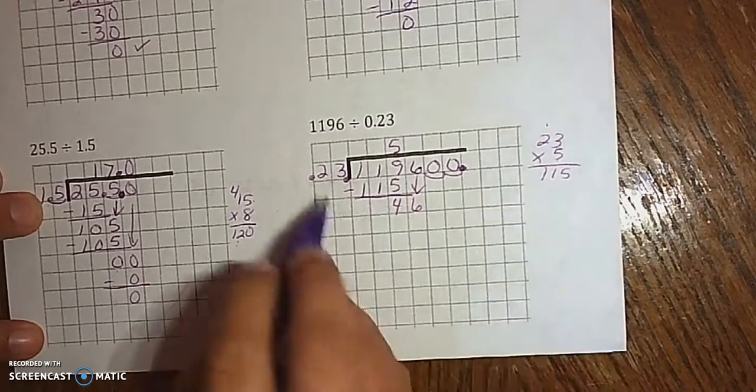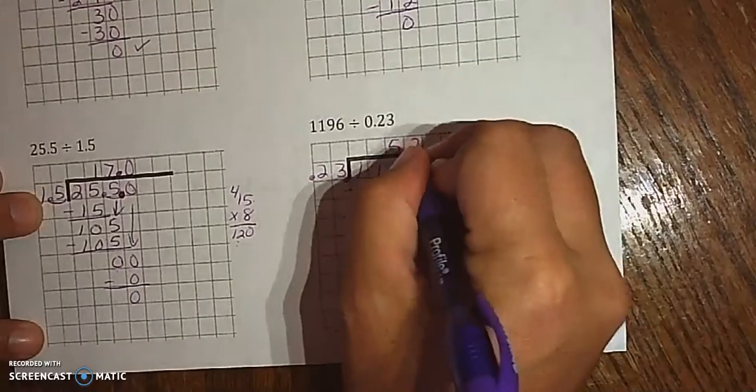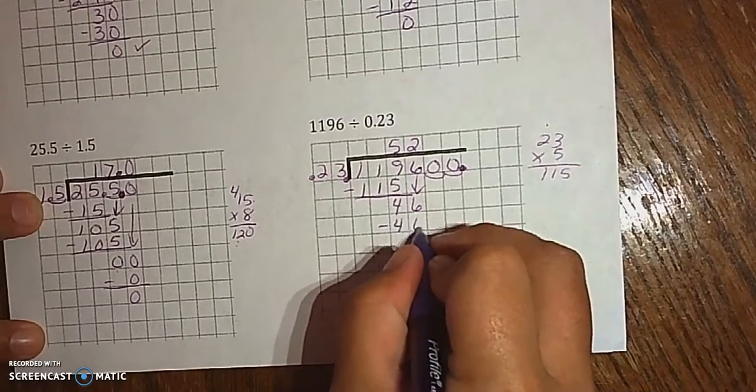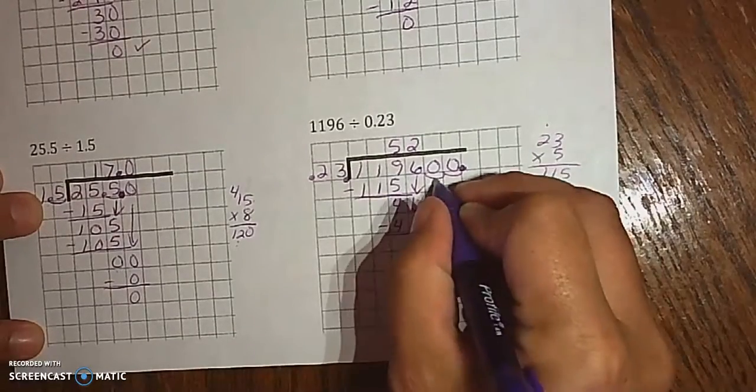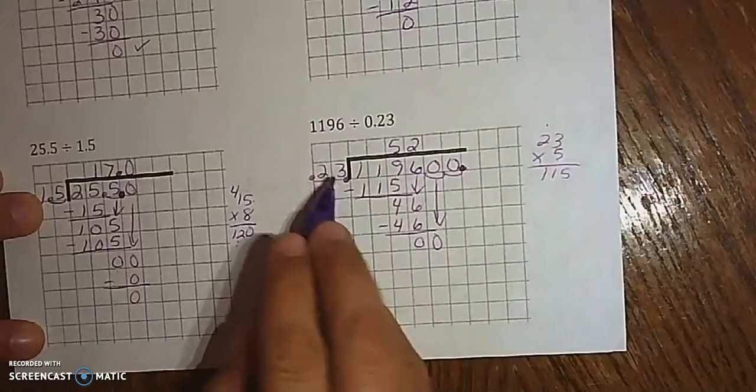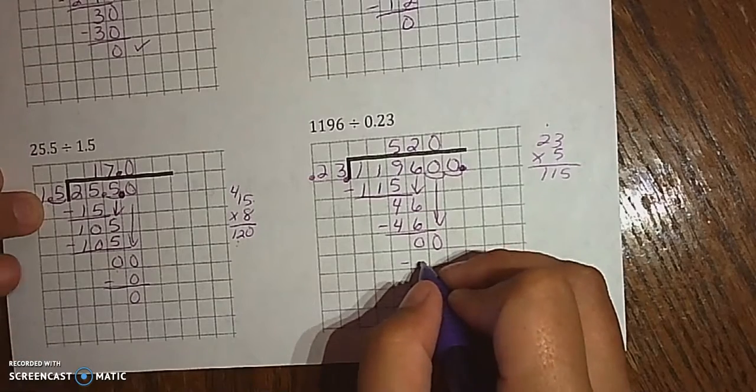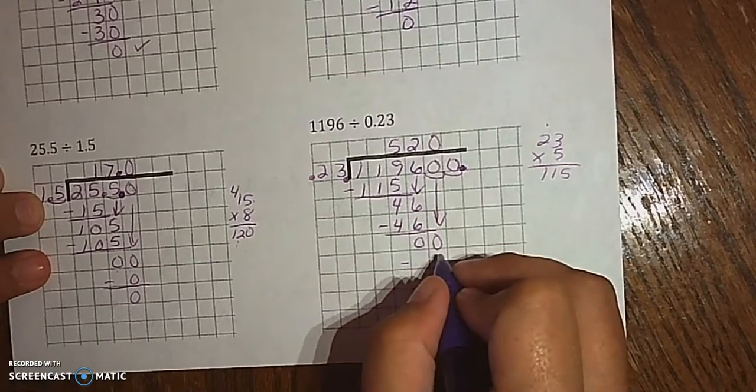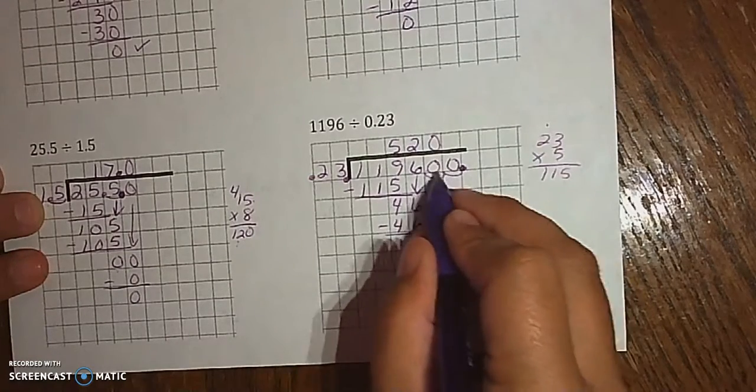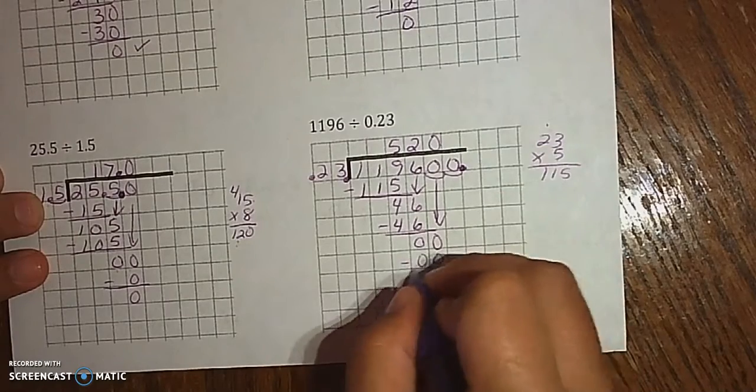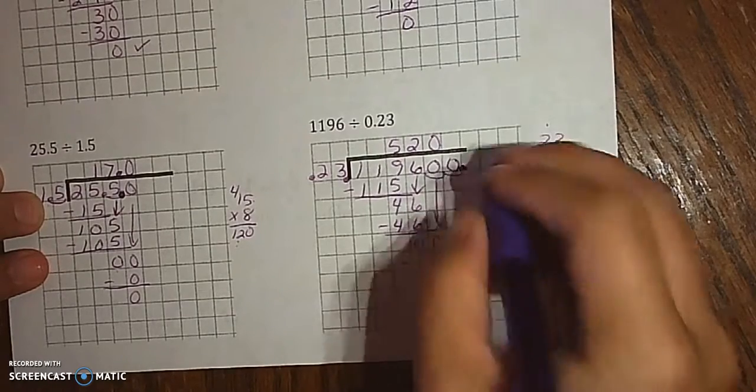Bring down the 6. 23 can go into 46 twice, and it goes in evenly, which is a 0. Bring down the 0. 23 goes into 0, 0 times. And unlike the last one, we have to keep doing the 0s on this one because we still have them in the regular number.